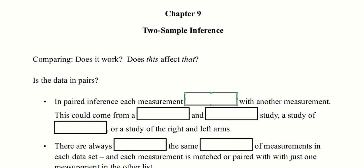Welcome to chapter 9. We're talking about two-sample inference — that is, confidence intervals and hypothesis tests. Two-sample means we can start to do something new: we can compare what we've got. We can ask the question, does something work? And does this population affect that population?